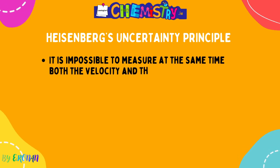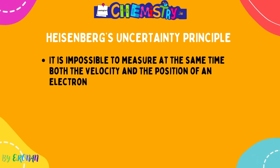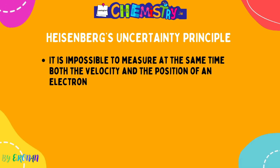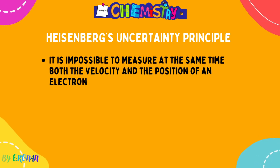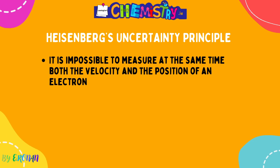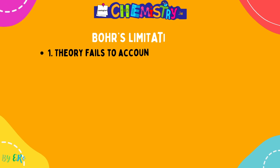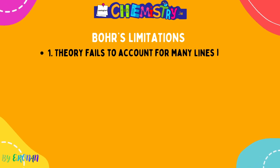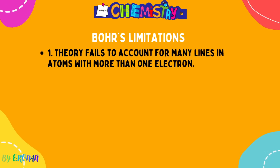Then we have Heisenberg's uncertainty principle — you may cover this in the periodic table chapter. It states that it is impossible to measure at the same time both the velocity and the position of an electron, because electrons are moving very fast and do not move in fixed paths. We can only refer to the probability of finding an electron.